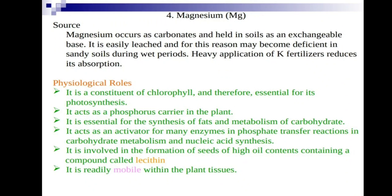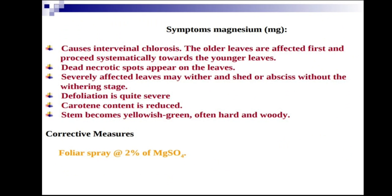In oil seeds like sunflower and groundnut, magnesium application increases the formation of oil content containing the compound lecithin. Magnesium is readily mobile within plant tissues. Deficiency symptoms cause interveinal chlorosis; older leaves are affected first and symptoms proceed systematically towards younger leaves.